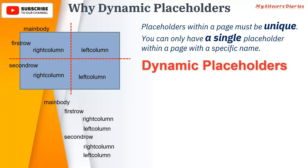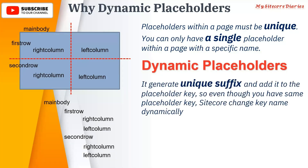How is it a solution? When you use the dynamic placeholder, even though as a developer I have given placeholder names like main body, first row, right column, and left column — if as an author you add the right column twice, what it does is add a unique suffix. That unique suffix makes both placeholders unique.